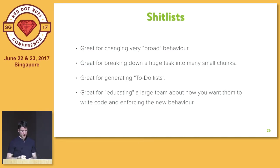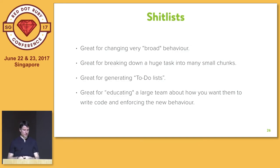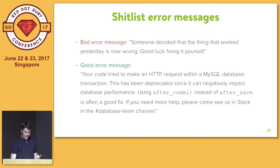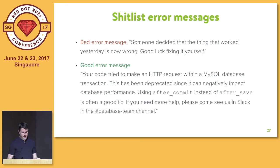This is really great for generating to-do lists and giving your team a progress indicator — you can see the list getting smaller and smaller every day. It's super awesome for motivation because people feel like they're making progress, and it's much more measurable than a log full of deprecation spam that nobody looks at. In summary, this is very valuable if you need to change very broad behavior, maintain some kind of internal API, or break down a huge task into small chunks. It's also awesome to educate your team about how you want them to write code, and this education happens at a code level — you make good error messages that explain what you're doing wrong, why it's wrong, how to fix it, and who to talk to.